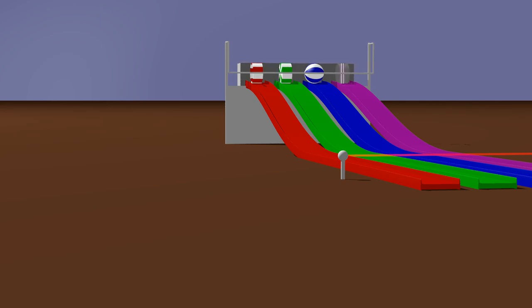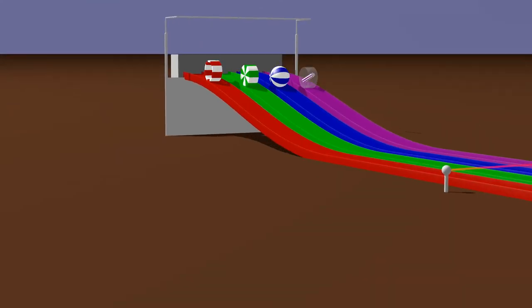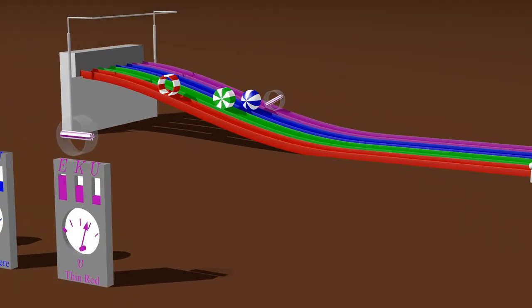One of the classic examples from introductory mechanics is an object that rolls without slipping. For this illustration, there are four objects that will roll down identical tracks as a sort of race of shapes.